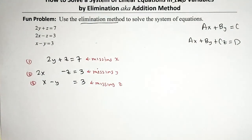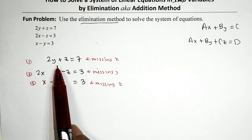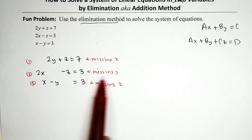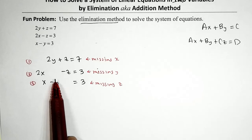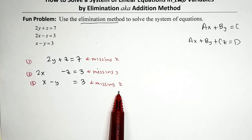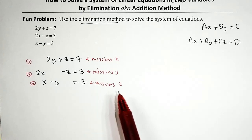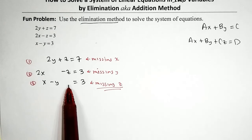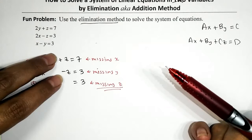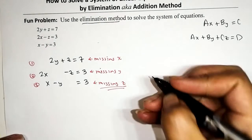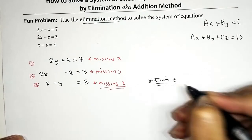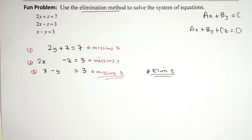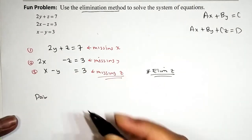Our game plan is to pair up equations to eliminate the desired variable. X is missing from the first equation, so maybe eliminate X. Y is missing from the second equation, so maybe eliminate Y. Z is missing from the third. In this case, it's pretty much like flipping a coin. I'm going to focus on eliminating Z — not only is it missing from the third equation, but if I pair up the top two equations and add them, Z will cancel out. So: eliminate Z. We'll pair equations one and two, and then pair equations two and three.